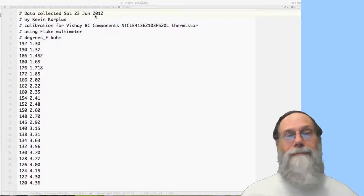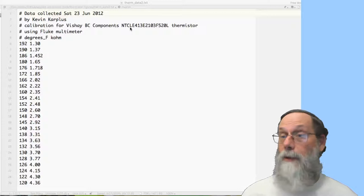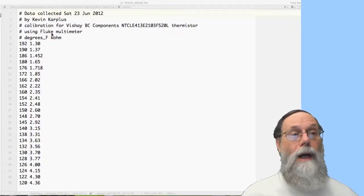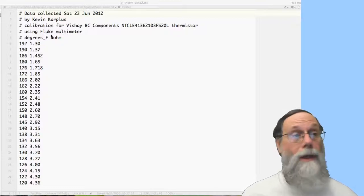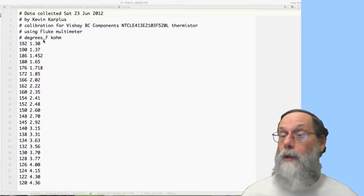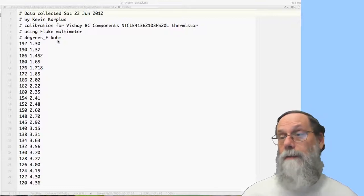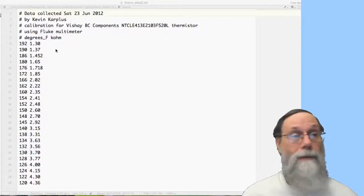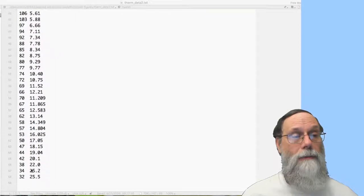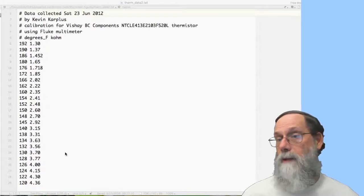I have the particular thermistor that I was calibrating. I was using a Fluke multimeter, can't do that anymore because that multimeter broke. I recorded two columns of information, the first one is degrees in Fahrenheit, and the second one is resistance in kilo ohms. I've got things from temperature of 192 degrees Fahrenheit down to about 32 degrees Fahrenheit. And you can see I have a fair number of measurements here.